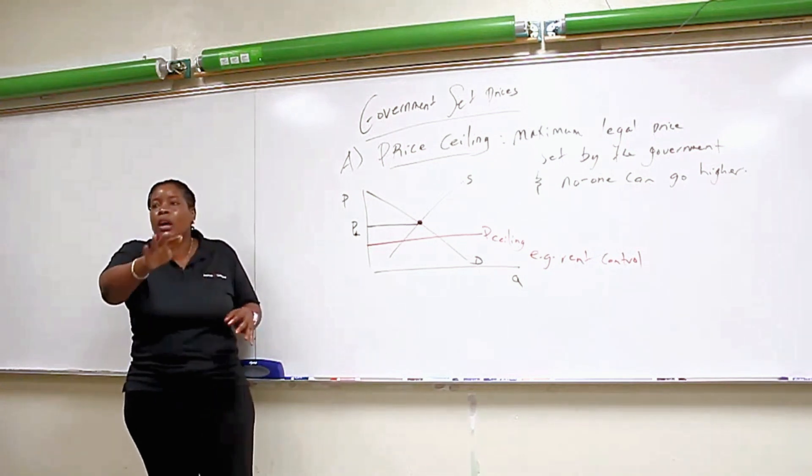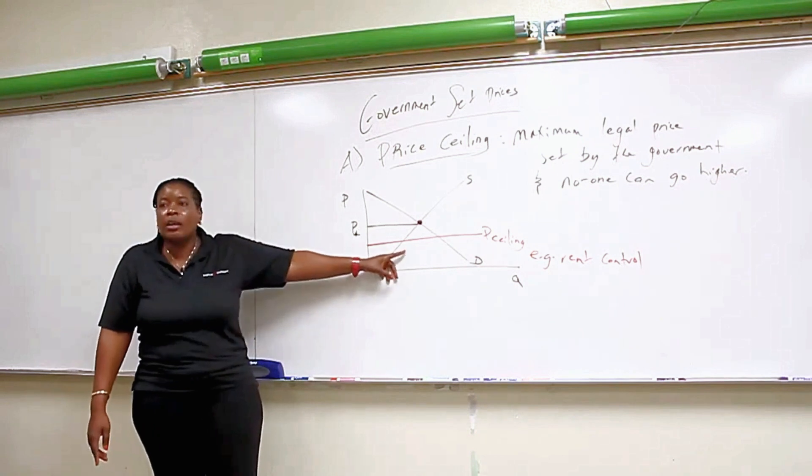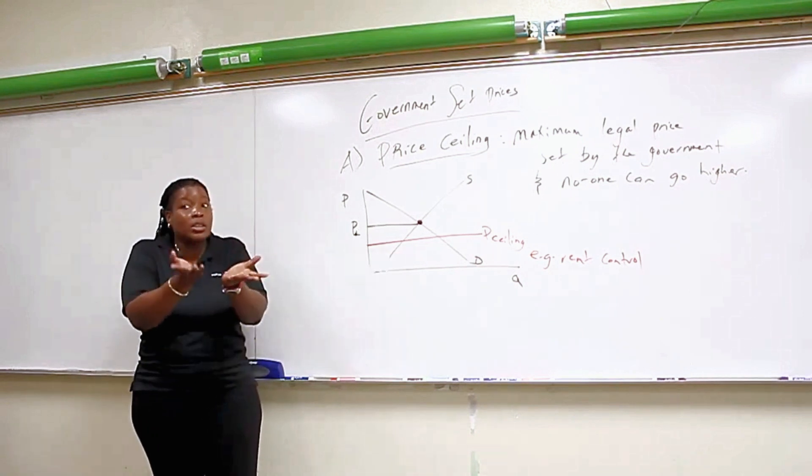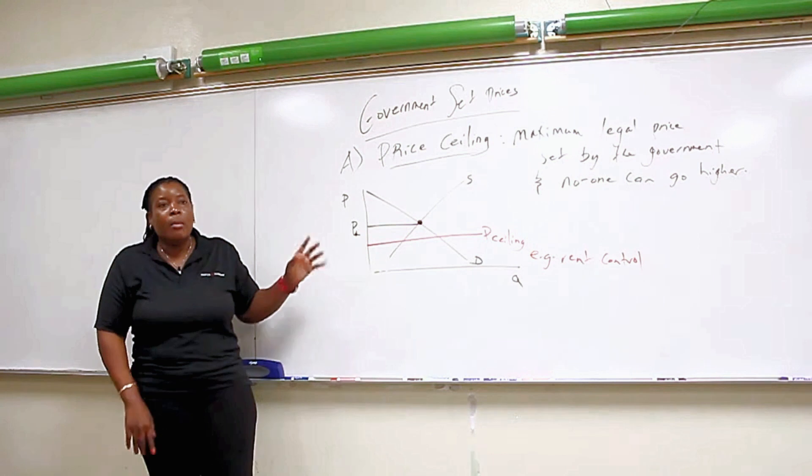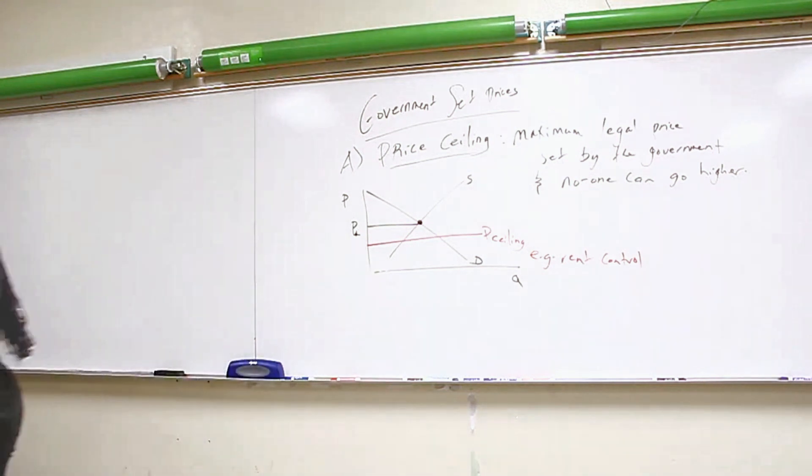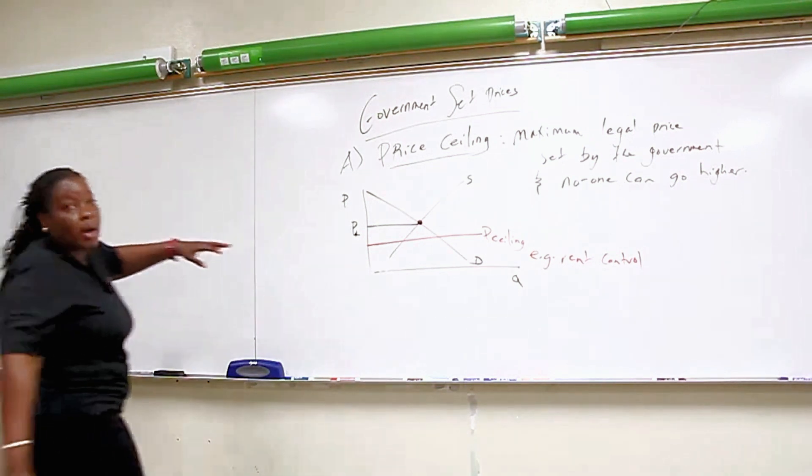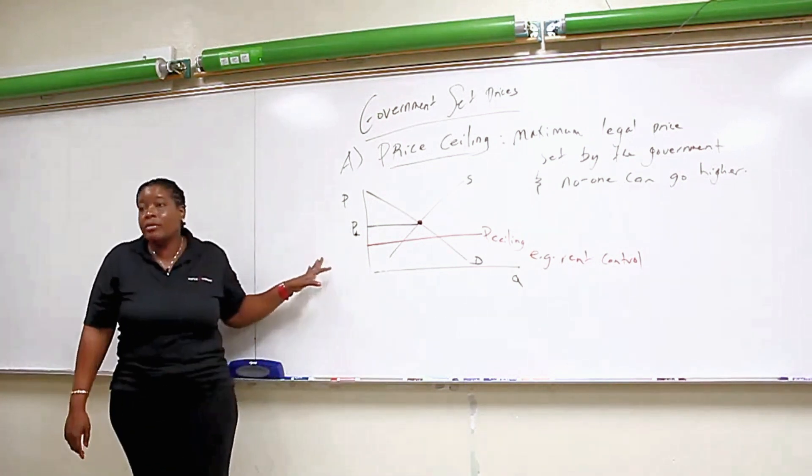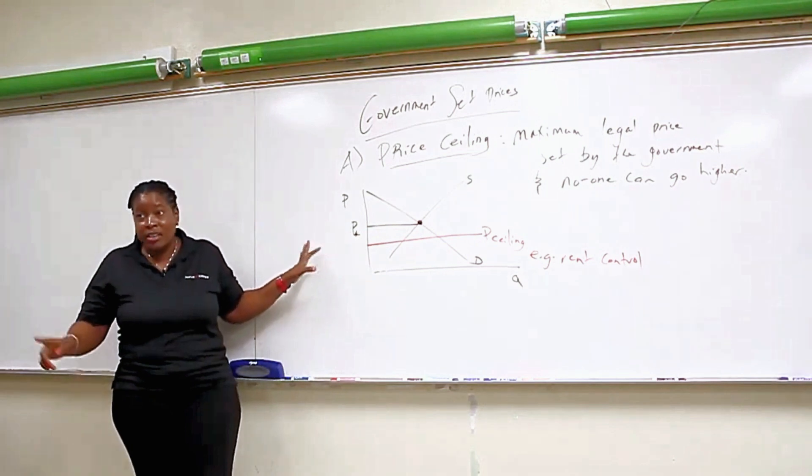You're making housing affordable, but you effectively cause a shortage. Again, their intention might be very noble, but once you intervene in markets, there are certain costs that you have to bear. So any intervention in the market, you're going to have certain costs to bear. That's one example.